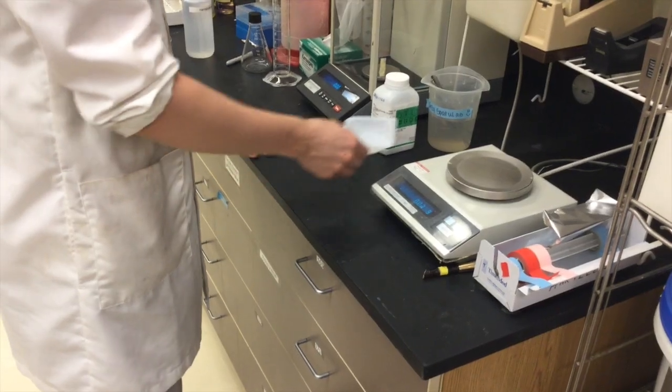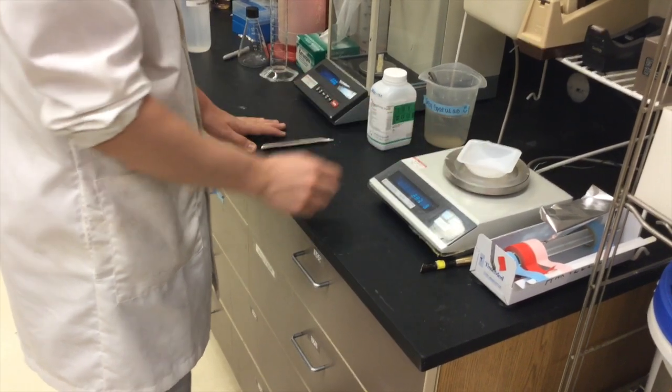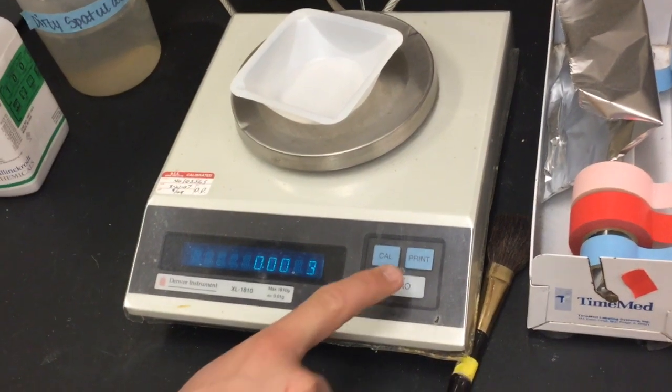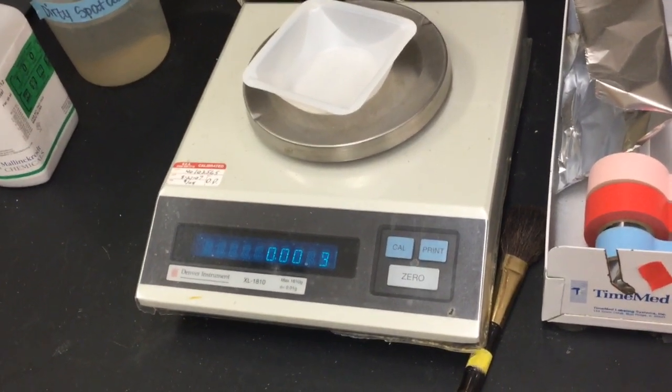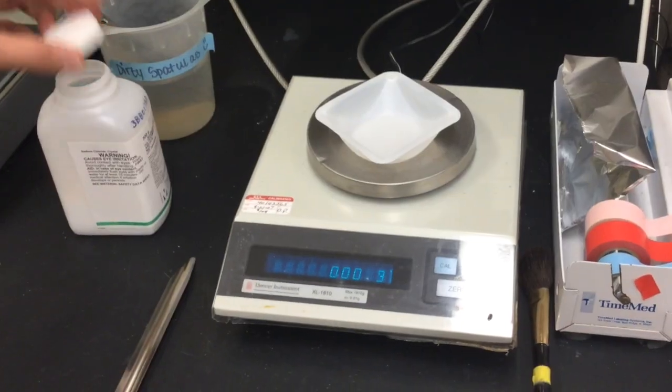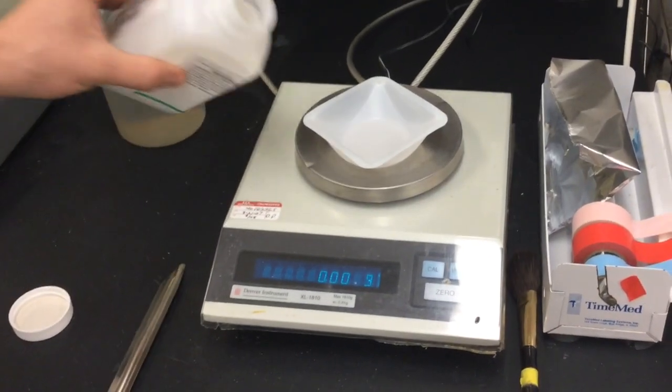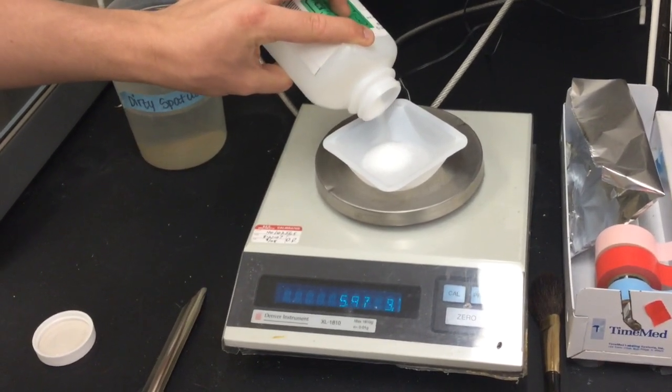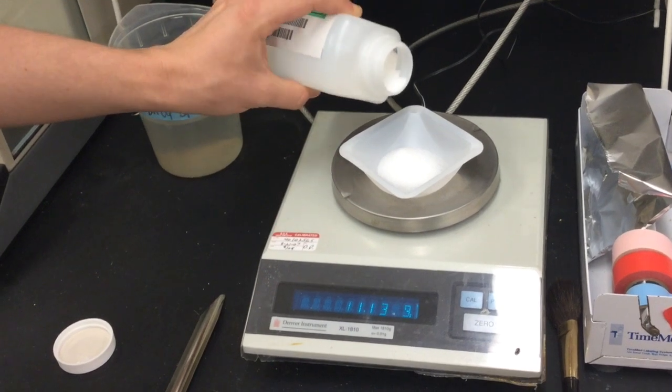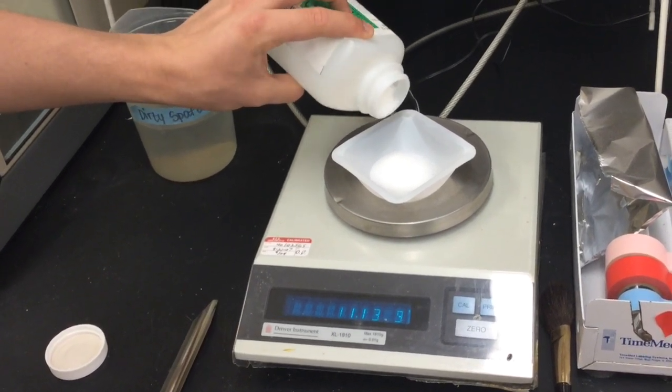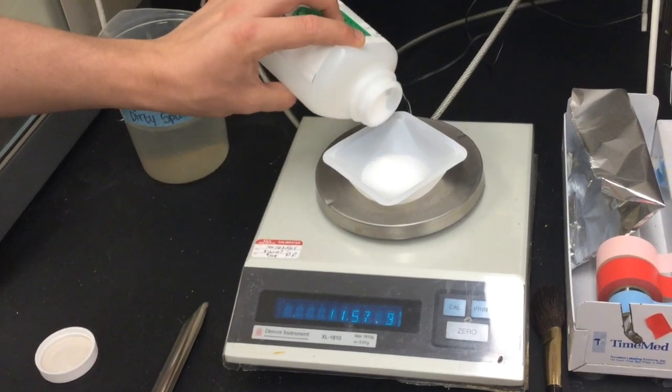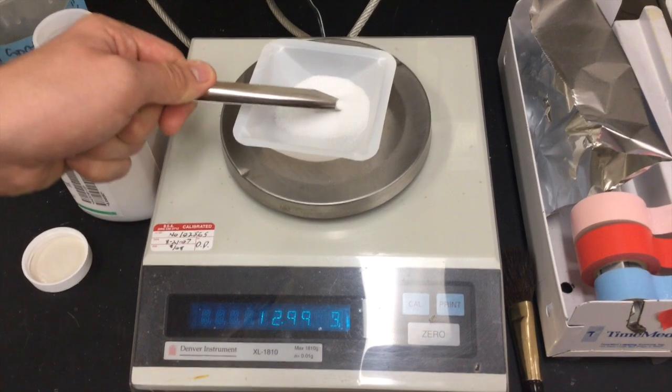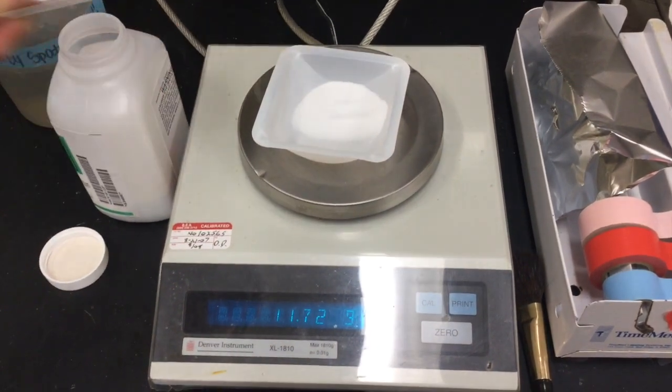First, place the empty container to be used to measure the compound onto the scale. Then click tear, or in this case, zero. This resets the scale's measurement to zero so that this container is not included in the measurement. Carefully pour sodium chloride into the container until the scale reads 11.69 grams.